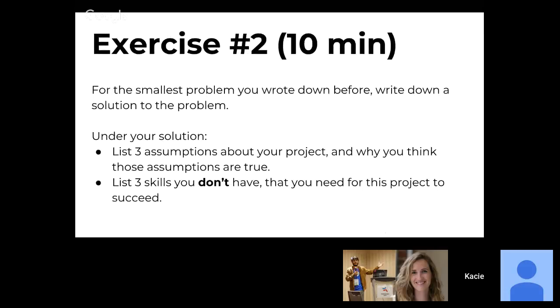So exercise two. For the smallest problem you wrote down before, write a solution to that problem. Under the solution, you should list three assumptions about the project and why you think those assumptions are true, and then list three skills you don't have that you need for this project to succeed.